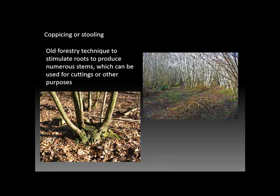Another variation on layering is an old forestry technique called coppicing or stooling. In this technique the stem or trunk of the tree is cut off and allowed to form numerous new shoots or stems. Sometimes these coppices are covered with soil and then they're called mound layers or mound layering. These numerous new shoots can be used either for production of cuttings or for other purposes such as basketry or even firewood, as was the case with coppices made in England in ancient times.